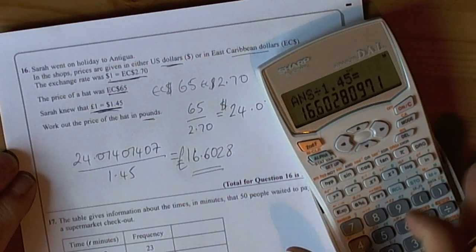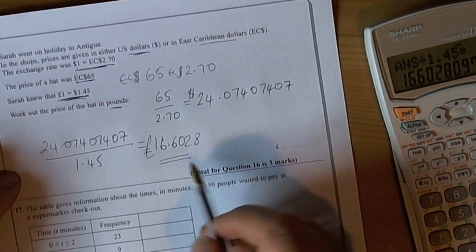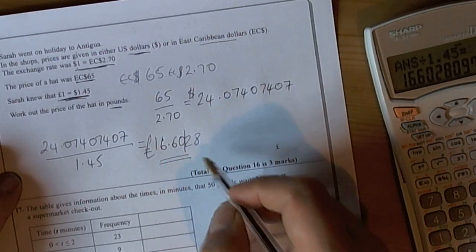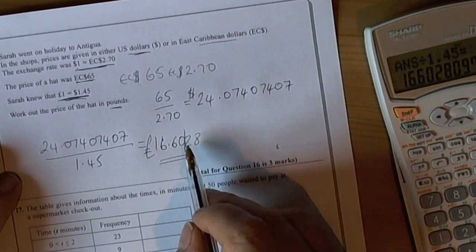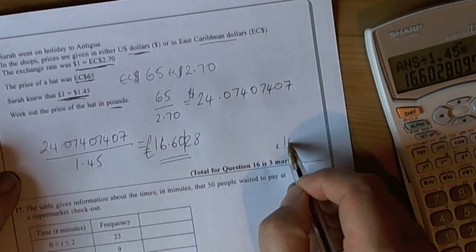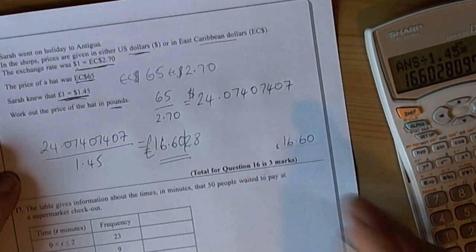That gives us an answer of 16.6028 pounds. We know from the way the British pound system works that we look at two decimal places for getting the pennies. The two does not change the zero in the penny place value, so it's going to be 16 pounds and 60 pence.